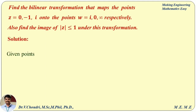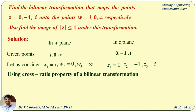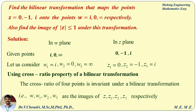In the w plane the given points are i, 0, infinity, and in the z plane: 0, minus 1, i. Let us consider the points w1 equal to i, w2 equal to 0, w3 equal to infinity — note that w3 equals infinity. In the z plane: z1 equal to 0, z2 equal to minus 1, and z3 equal to i.